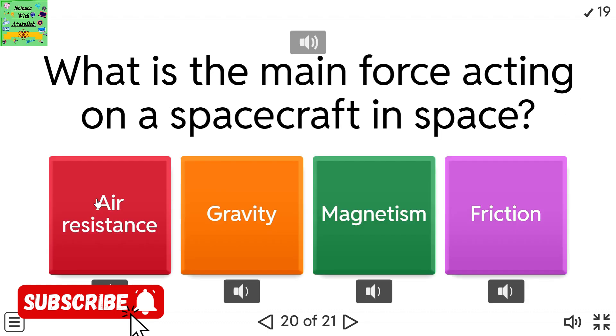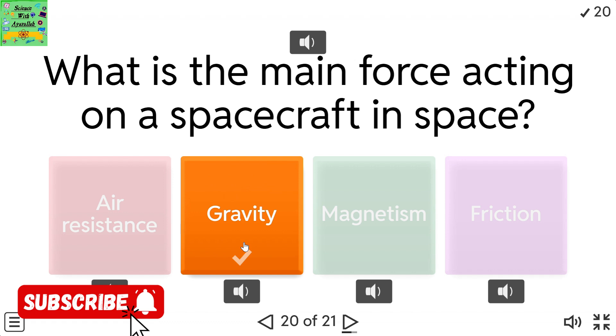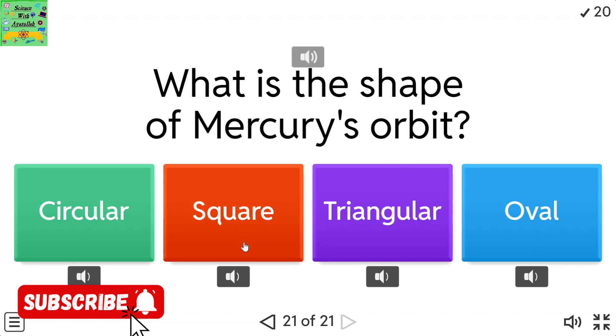What is the main force acting on a spacecraft in space? Air resistance, gravity, magnetism, friction. What is the shape of Mercury's orbit? Circular, square, triangular, oval.